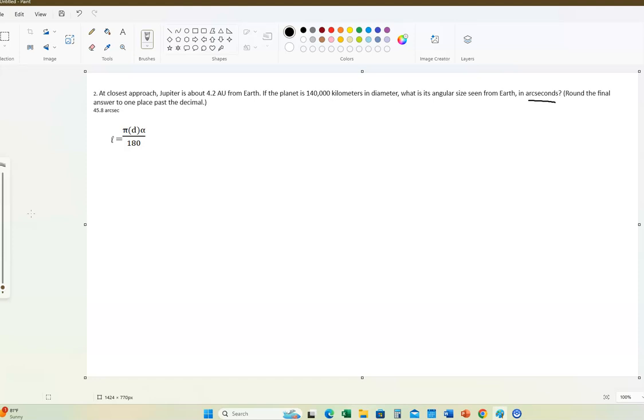We have this formula, right? This relates the actual size of something, that's the script L on the left-hand side of the equation, and that's equal to the distance D that the object is away from the viewer, and alpha is the angular size. That's really what we're looking for. They give us the distance in astronomical units, so we'll have to convert that. Let's rearrange this equation and solve it for alpha.